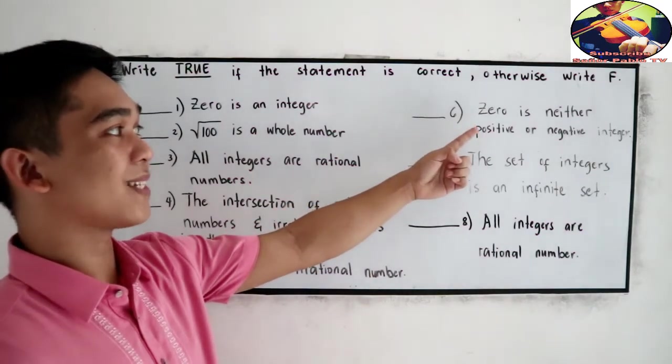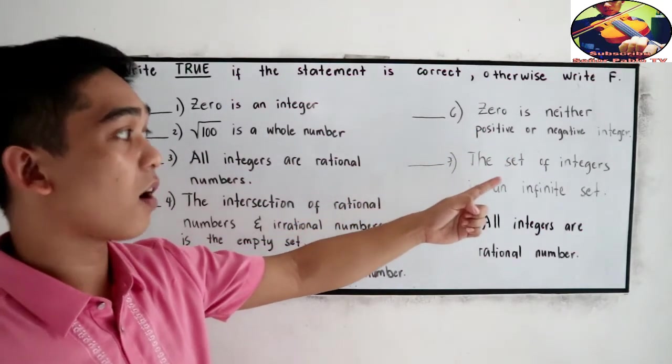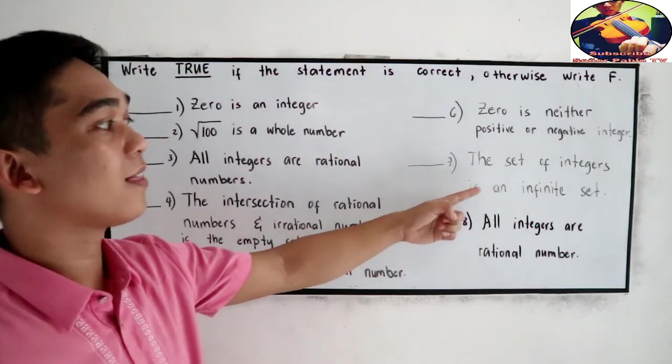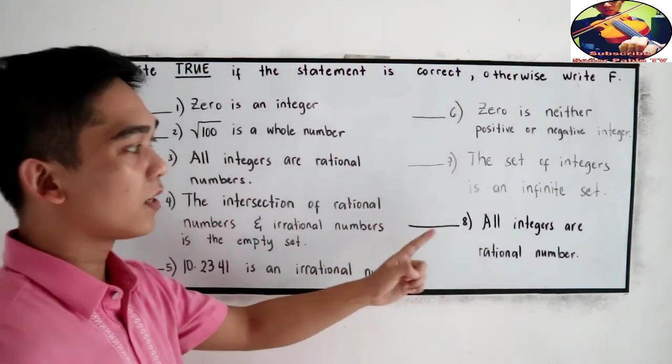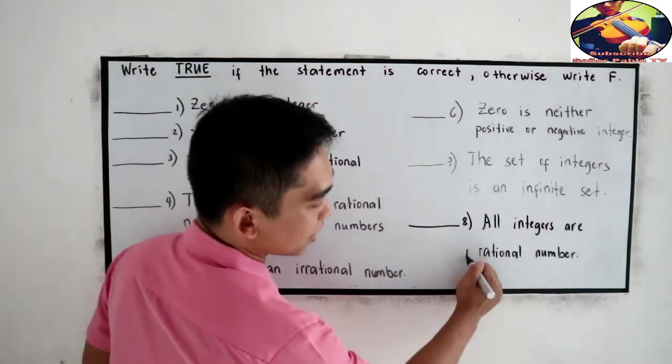Number 6, zero is either positive or negative integer. Number 7, the set of integers is an infinite number. Number 8, all integers are irrational numbers.